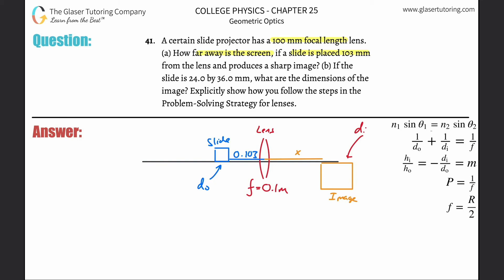do is the distance of the object from the lens, and di is the distance of the image from the lens. We're solving for di, so we need a formula that relates these variables.